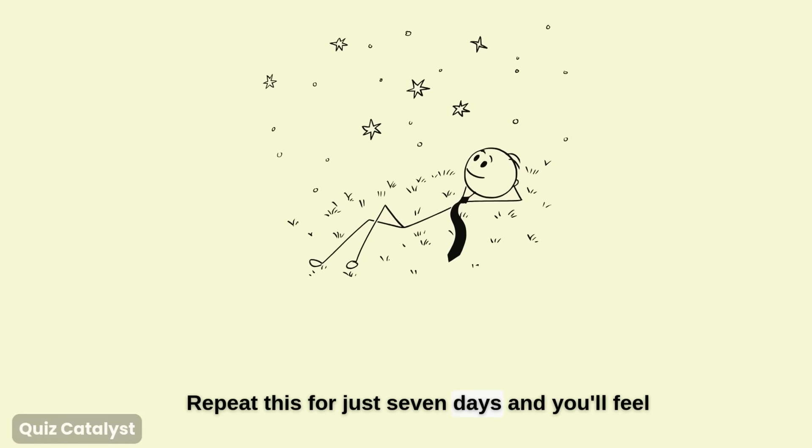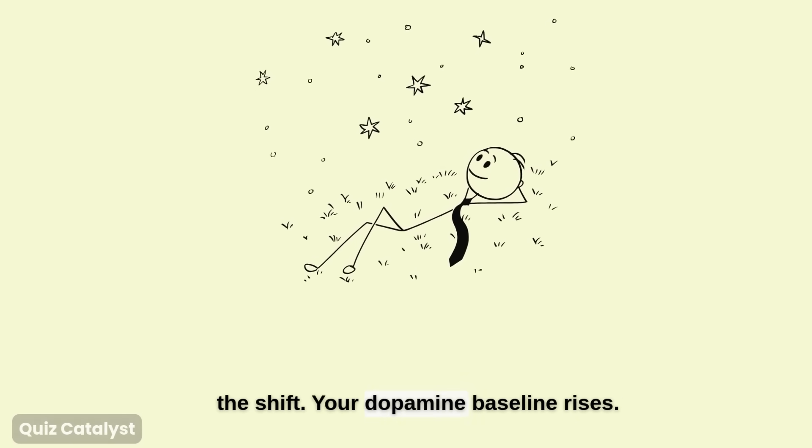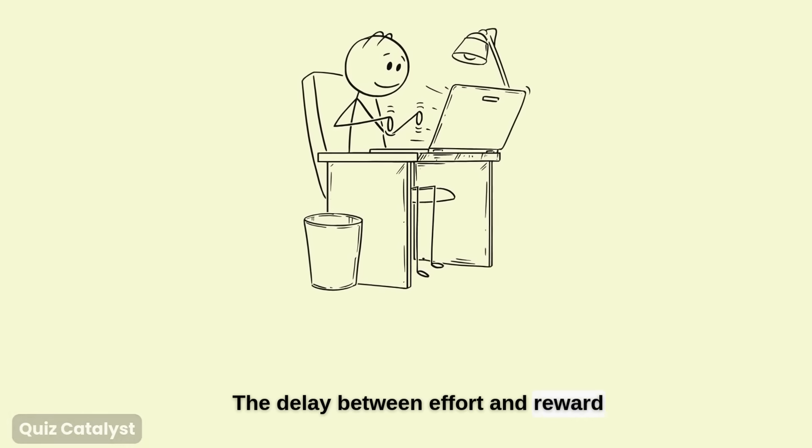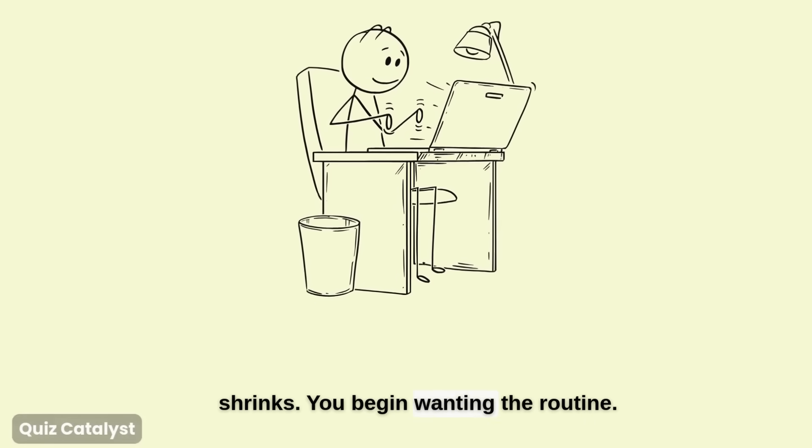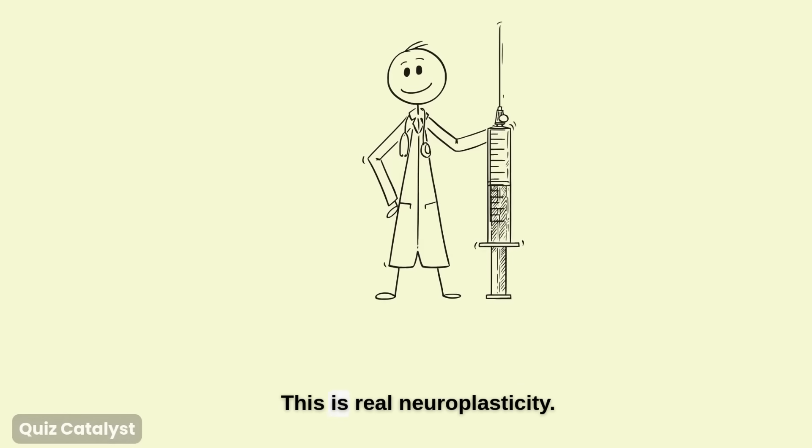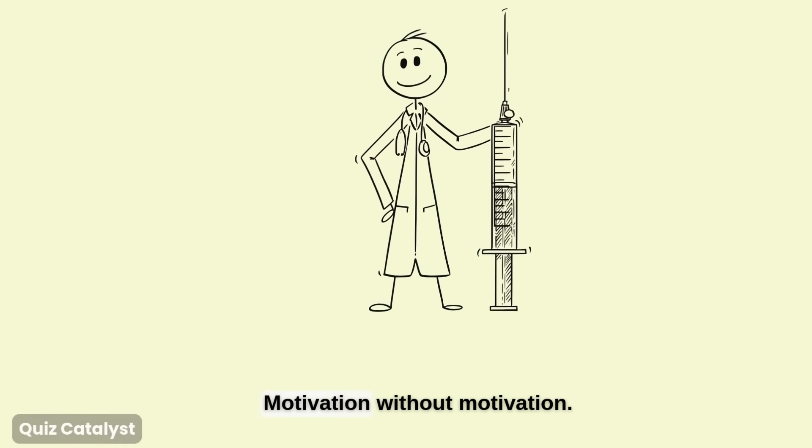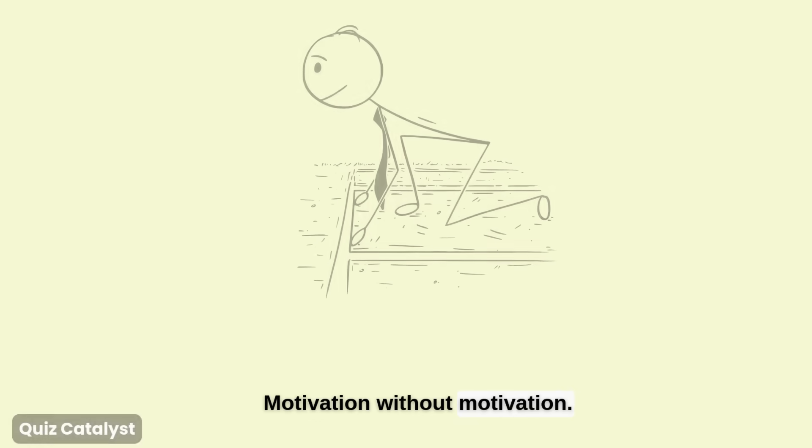Repeat this for just seven days and you'll feel the shift. Your dopamine baseline rises. Studying no longer feels heavy. Your brain starts craving progress. The delay between effort and reward shrinks. You begin wanting the routine. This is real neuroplasticity. Discipline without discipline. Motivation without motivation. Addiction, but a healthy one.